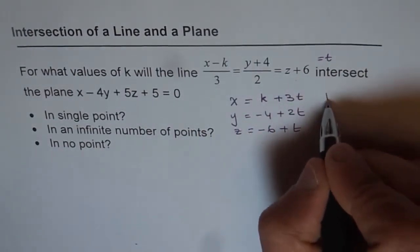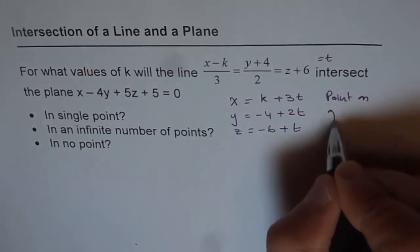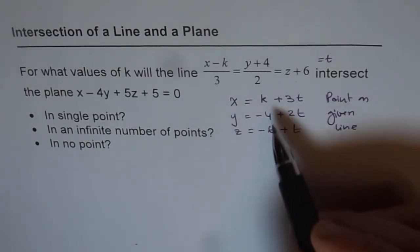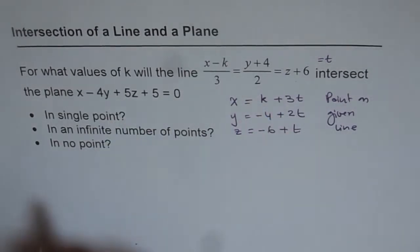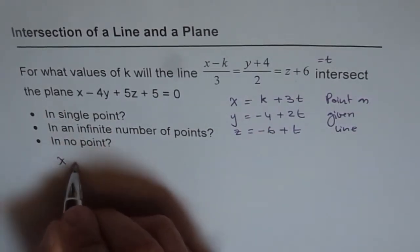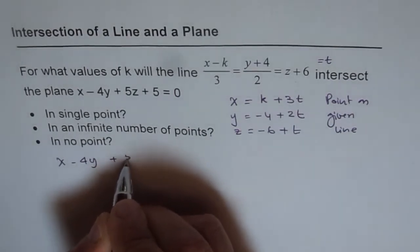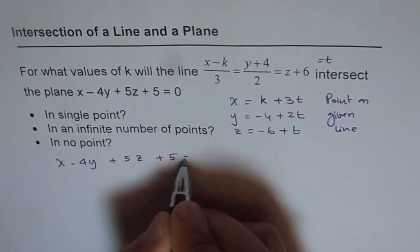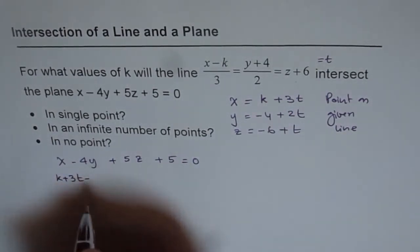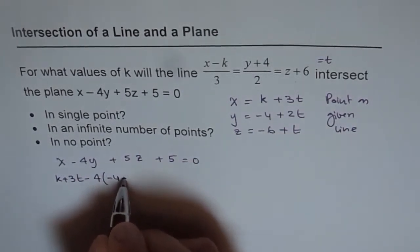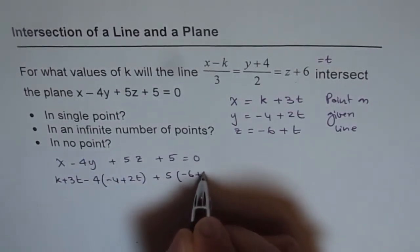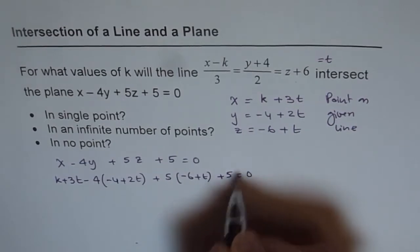This represents a general point on the given line. This point will lie on the line and we need to find the point of intersection, so we substitute it into the equation of the plane: x minus 4y plus 5z plus 5 equals 0. Substituting: (k plus 3t) minus 4 times (minus 4 plus 2t) plus 5 times (minus 6 plus t) plus 5 equals 0.